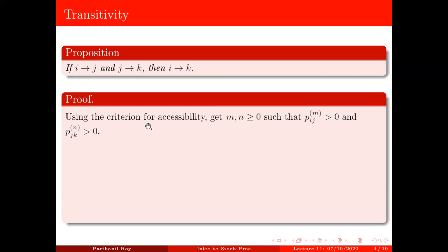So if you use this criteria of accessibility, which is a proposition, we can get m and n both non-negative integers such that pijm is strictly positive and pjkn is strictly positive. And this is just because i leads to j and j leads to k. Now let's look at pik of m plus n. Because of Chapman-Kolmogorov equation,